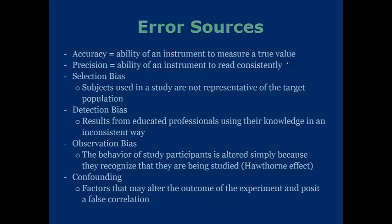You have to be accurate and precise to have a proper experiment. Selection bias is when subjects used in a study are not representative of the target population — maybe you picked your subjects improperly, or you didn't get a nice enough distribution of them. A detection bias results from educated professionals using their knowledge in an inconsistent way, basically equating different results based on knowledge that may not be consistent throughout the experiment.